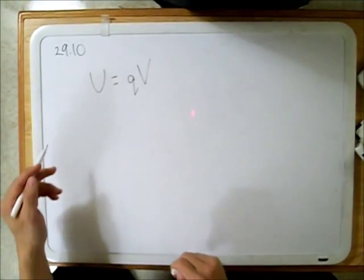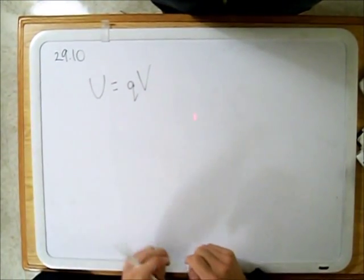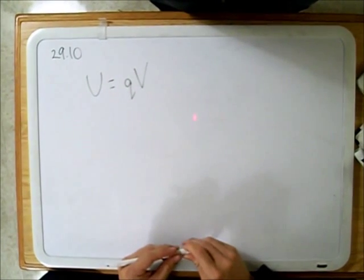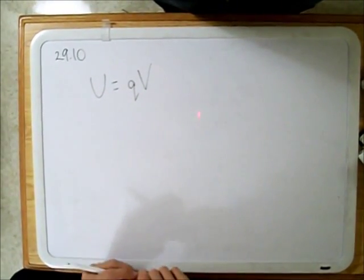This is problem number 29.10 and it's asking us what is the speed of an electron that has been accelerated from rest through a potential difference of a thousand volts.